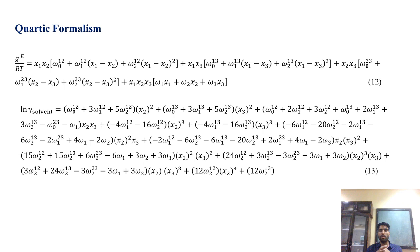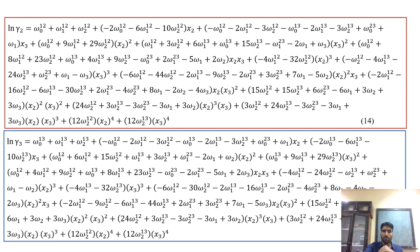For example, if there is a polynomial of degree 4 and we have to obtain the values of ln gamma solvent, ln gamma 2, and ln gamma 3, then we have to multiply by the total number of moles, and then differentiate again with respect to n2, n3, and n1 solvent, and we will obtain these expressions.